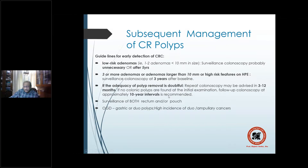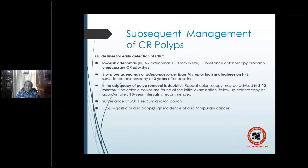If no colonic polyp is found on initial examination, surveillance after 10 years is sufficient. Surveillance must include both the pouch (if created) and the rectum. In patients who had colectomy with pouch creation, the pouch also requires surveillance. Upper GI endoscopy is also part of surveillance, because syndromic colorectal polyps have a high incidence of duodenal ampullary cancer.